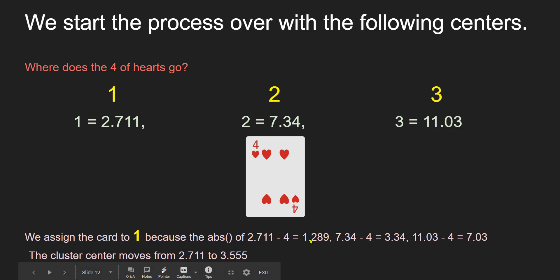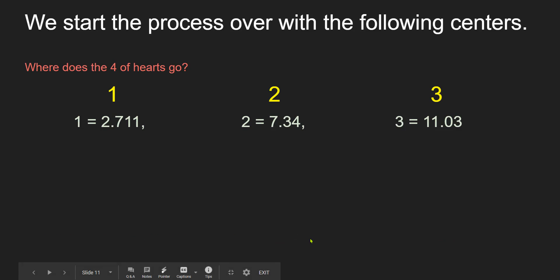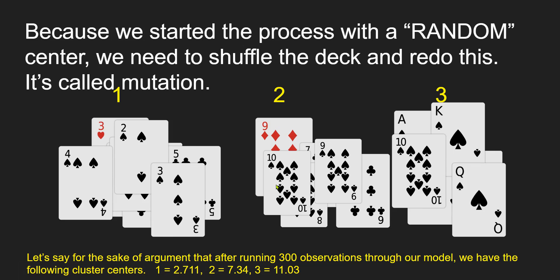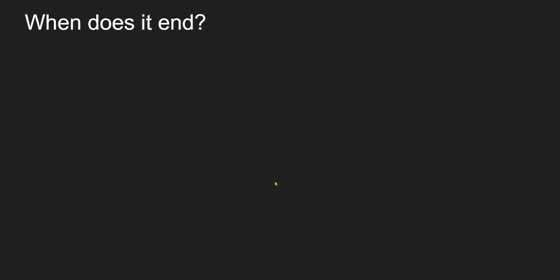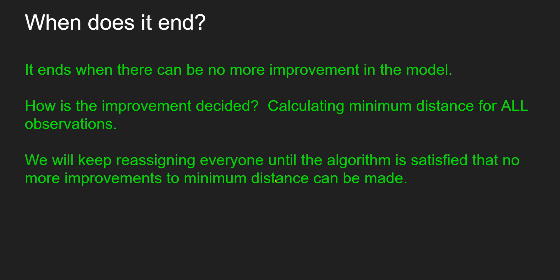The artificial intelligence will say: I got a total of 687.243 for total distance — let me mutate this again and see if I can get a lower total distance. If it can't, then it ends. But it could keep running until the end of time. It just so happens we have supercomputers and fast servers. Also of note in SAS, you can put in that you only want three iterations: try to improve it three times, and then just give me the results. We will keep reassigning everyone until the algorithm is satisfied that no improvements to minimum distance could be made.